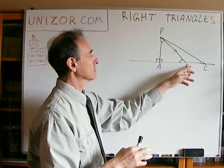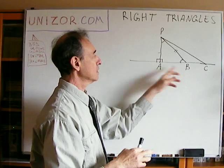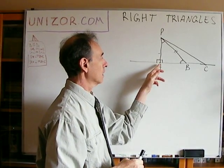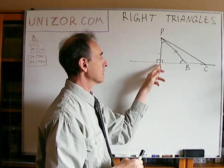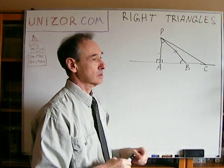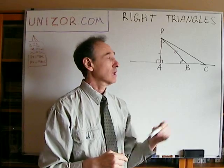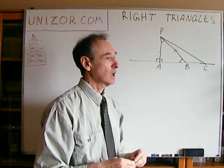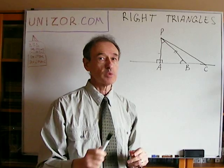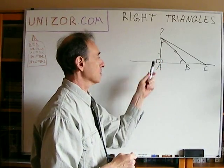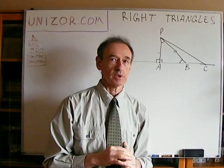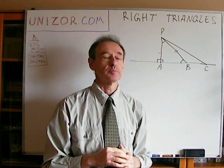The bigger the angle, the bigger the side opposite it; the smaller the angle, the smaller the side. So no matter what point B is chosen — as long as it doesn't coincide with A, as long as it forms a real right triangle — then the line PB, which is not a perpendicular, will always be longer than the perpendicular segment PA.